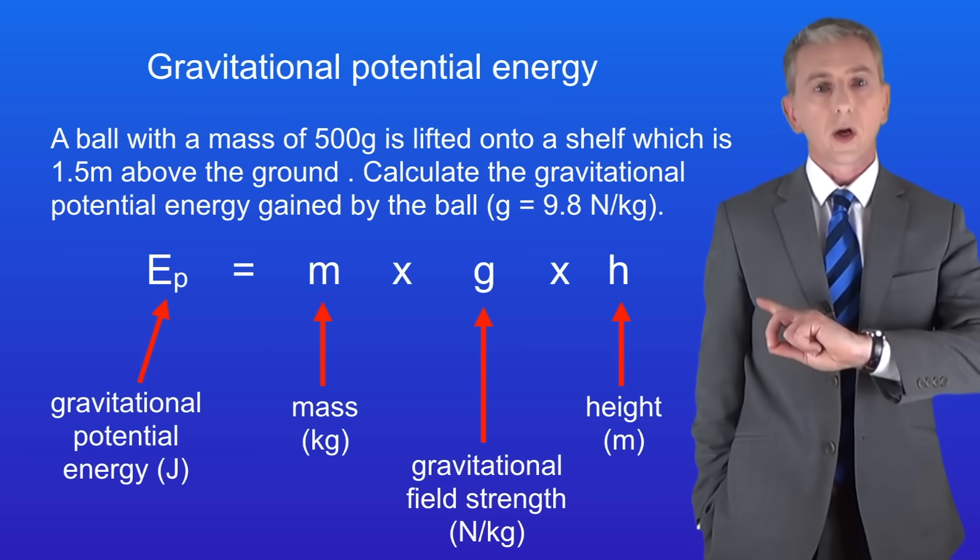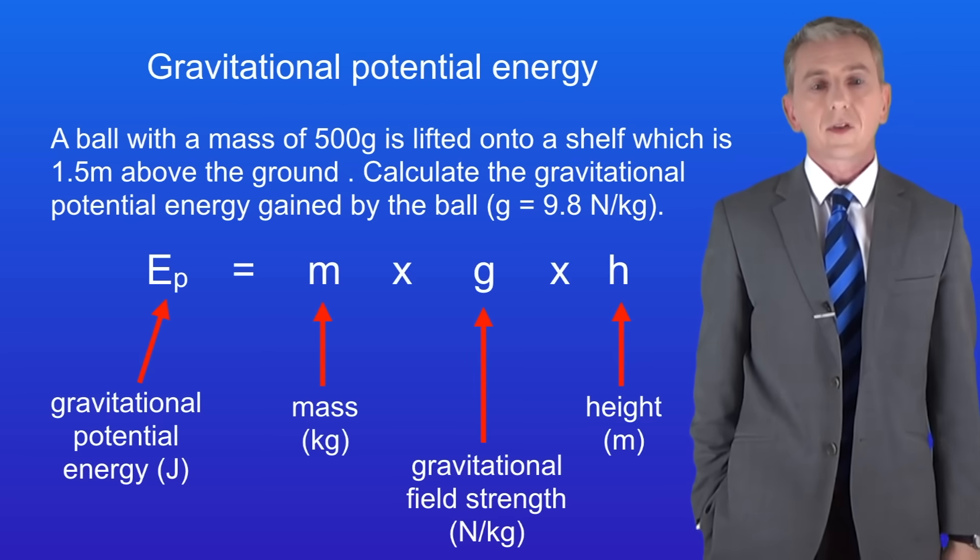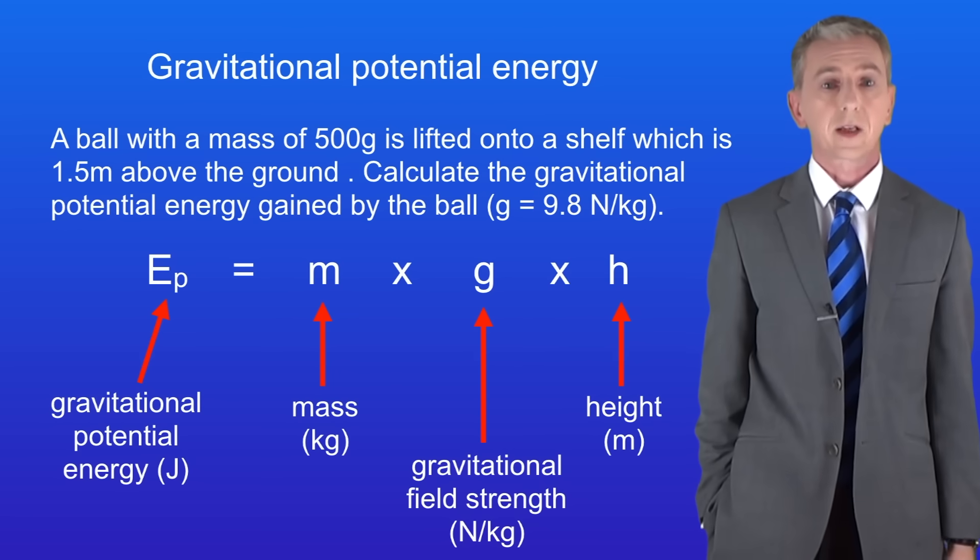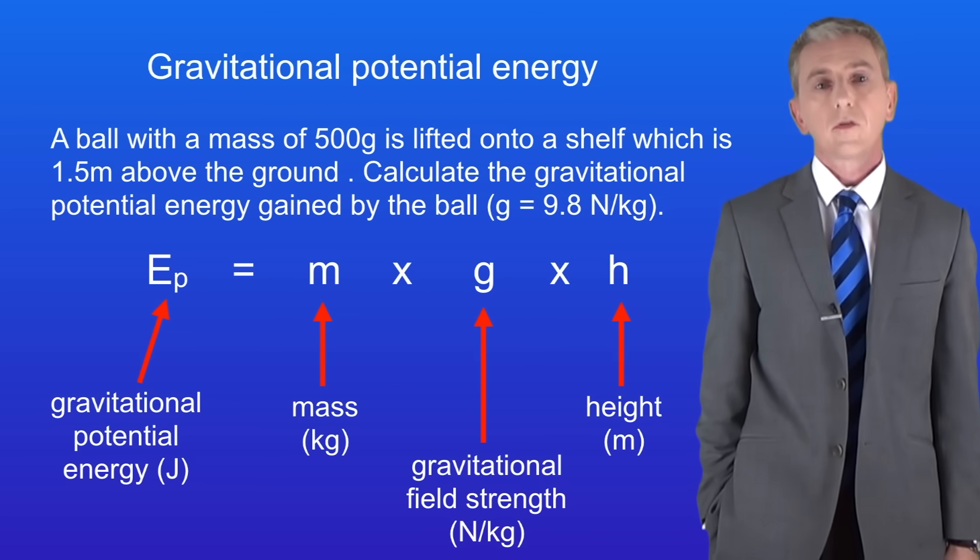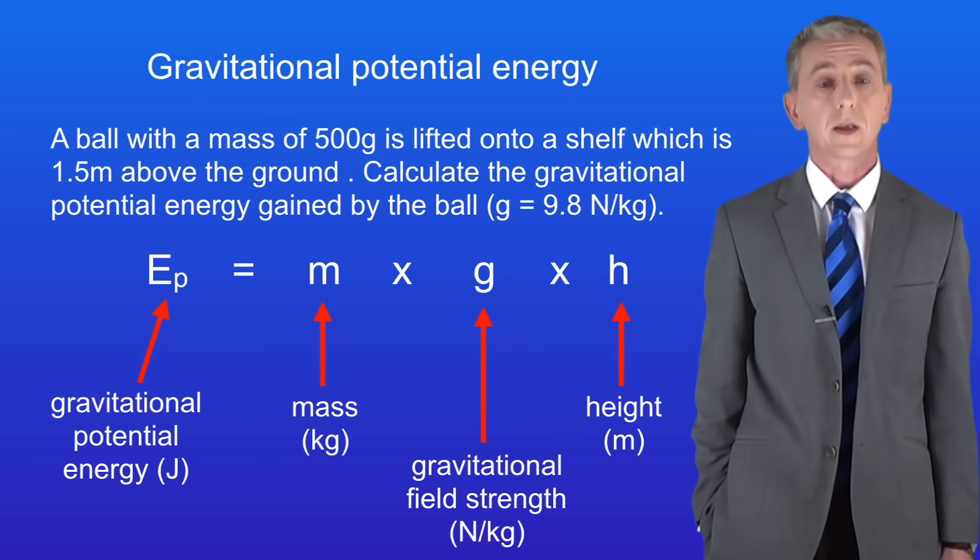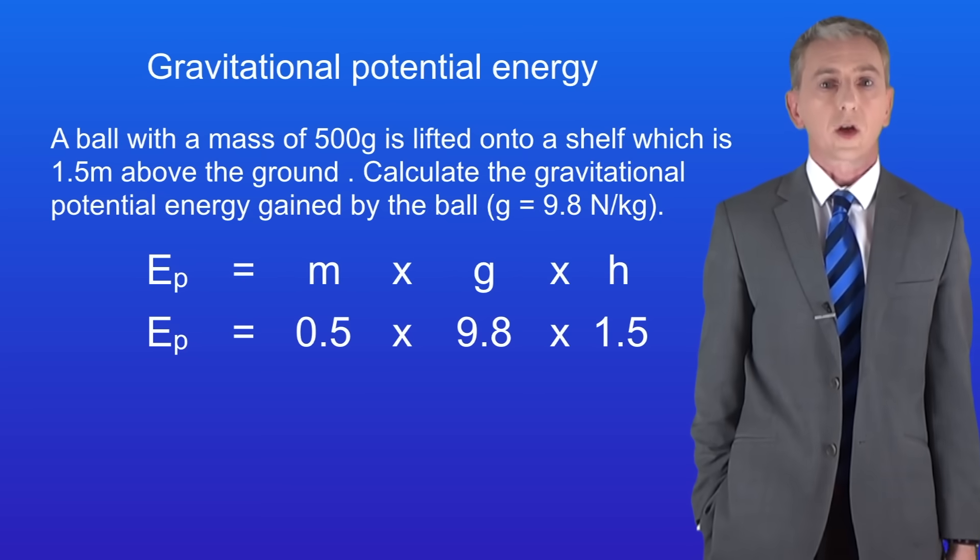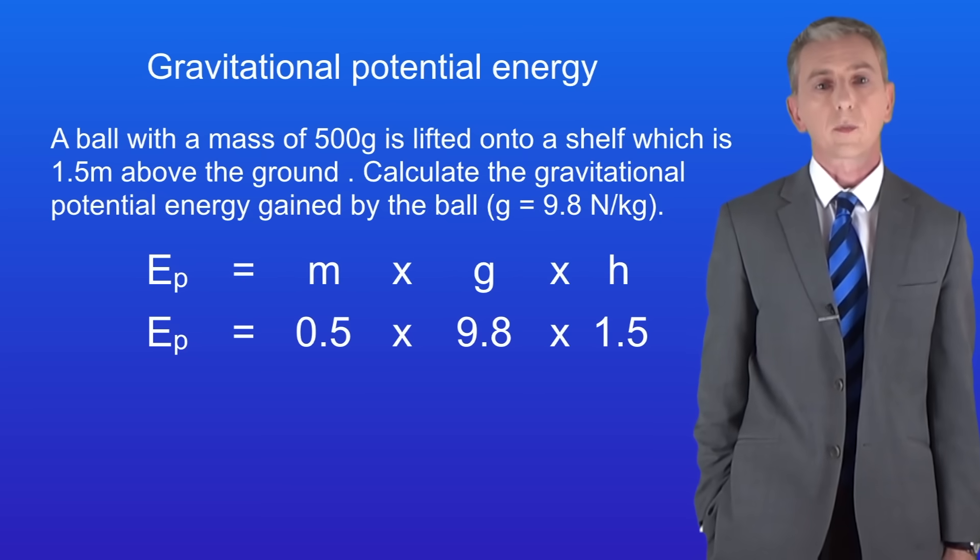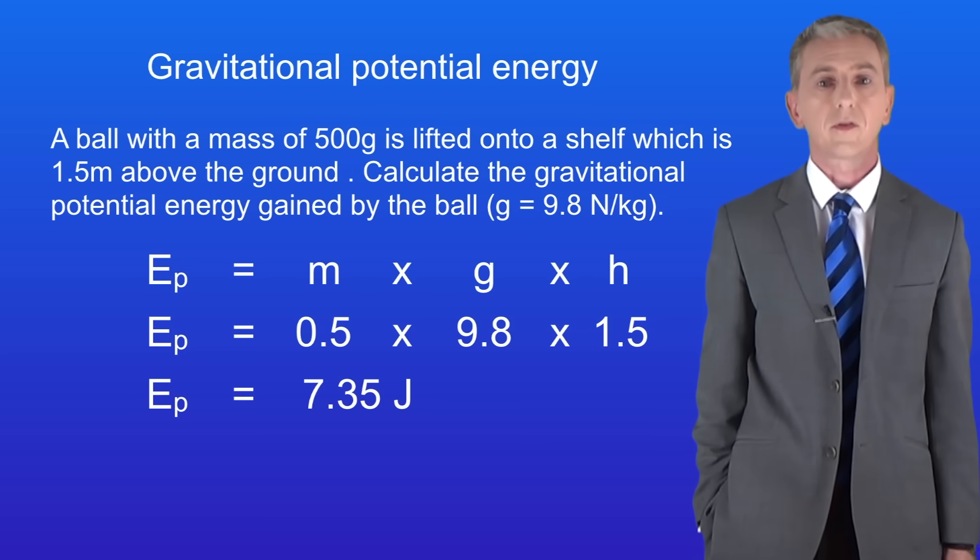Okay, here's the equation that we're using. The mass is 500 grams so first we've got to convert this to kilograms by dividing by 1000. 500 grams is 0.5 kilograms. The value of the gravitational field strength is 9.8 newtons per kilogram and the height is 1.5 meters. Putting these numbers into the equation gives us a value for the gravitational potential energy of 7.35 joules.